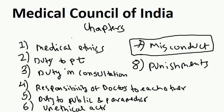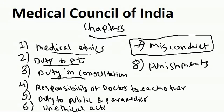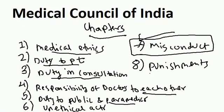Quickly, the chapters of MCI — there are eight chapters. The first is regarding medical ethics. The second is the duty of a doctor to the patient. The third is the duty of a doctor in consultation. The fourth is the responsibility of doctors to each other. The fifth is the duty to the public and paramedics. The sixth is unethical acts. The seventh, which is important, is related to professional misconduct. And the eighth is punishment and discipline.